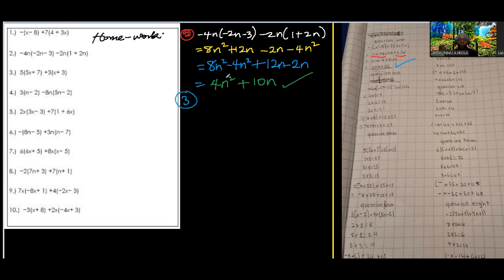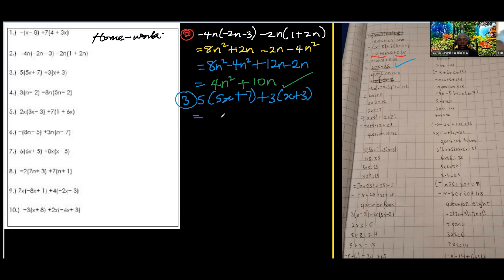Number 3: we have 5 into 5x plus 7, plus 3 into x plus 3. All of them are positive so our answers will be positive. 5 times 5 is 25, so I have 25x. 5 times 7 is 35. 3 times x is 3x, and 3 times 3 is 9. So I have 25x plus 3x.